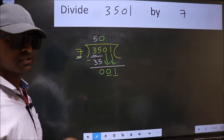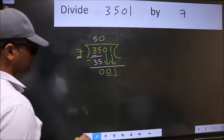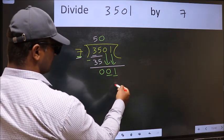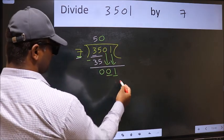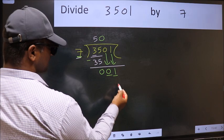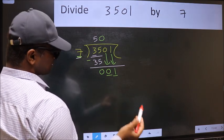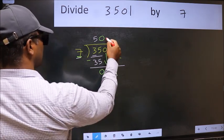Instead, what you should think of doing is, which number should we take here? If I take 1, we will get 7. But 7 is larger than 1. So what we should do is, we should take 0.